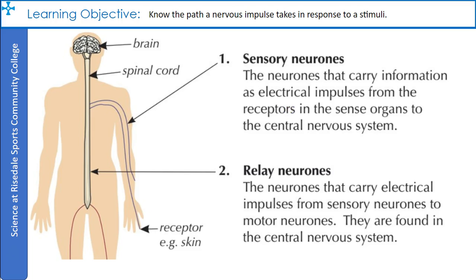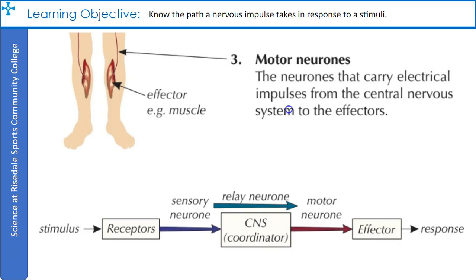Different types of neurons are involved in the transfer of information to and from the central nervous system. Sensory neurons carry information as electrical impulses from the receptors in the sense organ to the central nervous system. Relay neurons carry electrical impulses from sensory neurons to motor neurons — they are found in the central nervous system. Motor neurons carry electrical impulses from the central nervous system to the effectors. The transmission of information to and from the central nervous system is summarized in the flow chart.